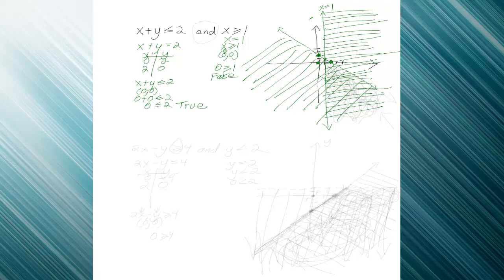In particular, what we're looking for — because this is an AND — we're looking for where the shadings overlap. And look, in this triangle right here, going down and going over, we have the two shadings overlapping. So this is our answer right there, where the two shadings overlap.